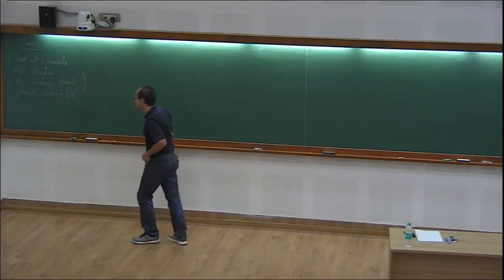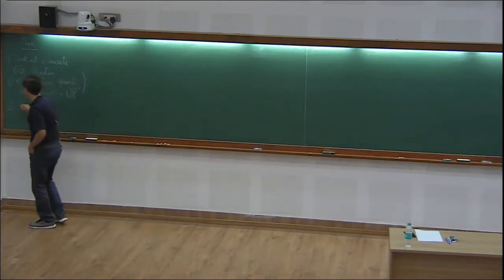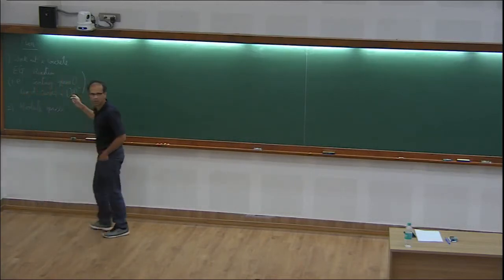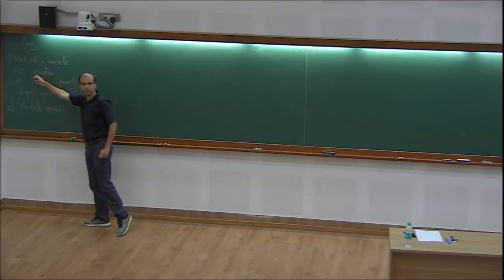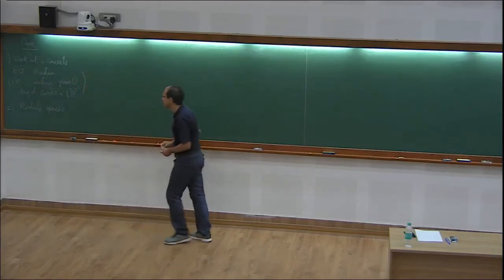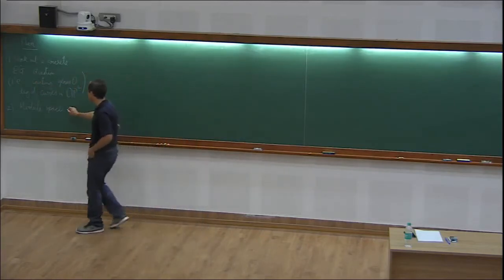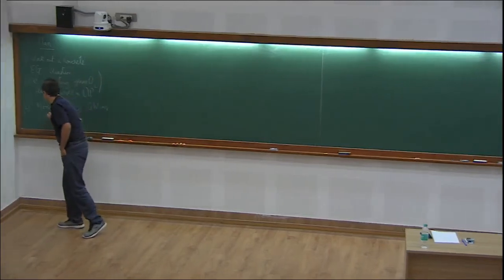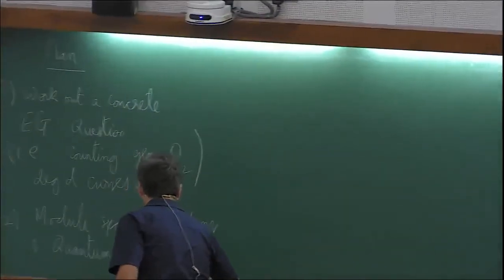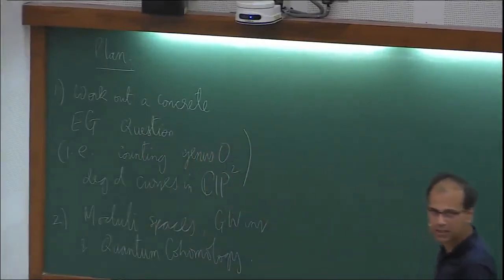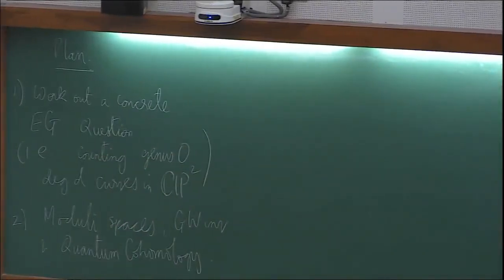Tomorrow, I want to formally define moduli spaces. Today, most likely, I won't use the word Gromov-Witten invariant anywhere, although this enumerative geometry question is basically counting Gromov-Witten invariants. Tomorrow I'll define moduli spaces, Gromov-Witten invariants, and then I'm hoping I can define quantum cohomology and relate it with today's discussion. That is the plan.